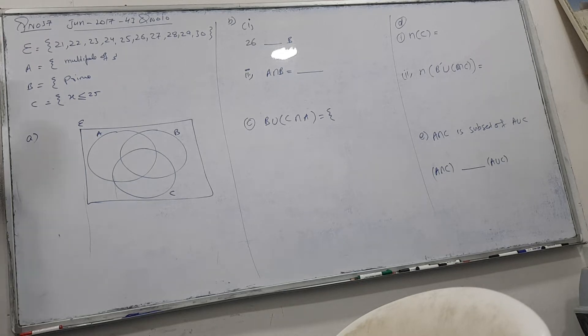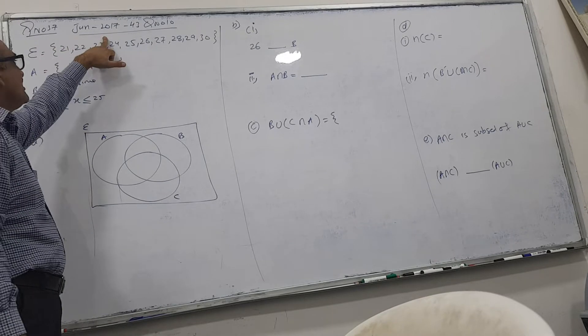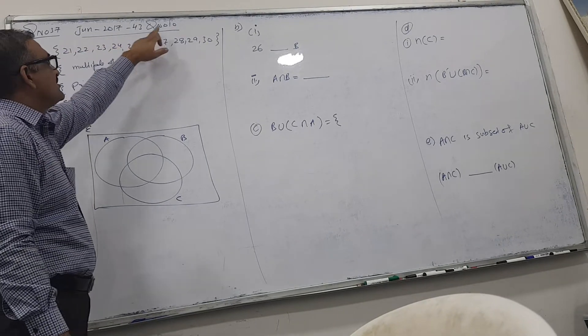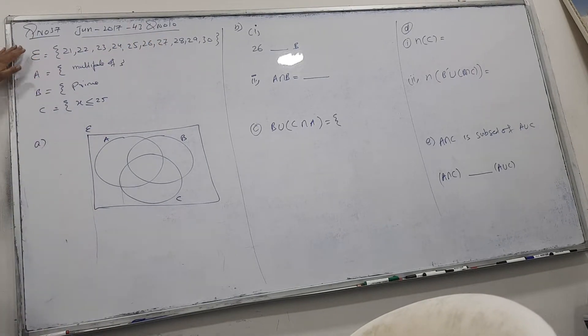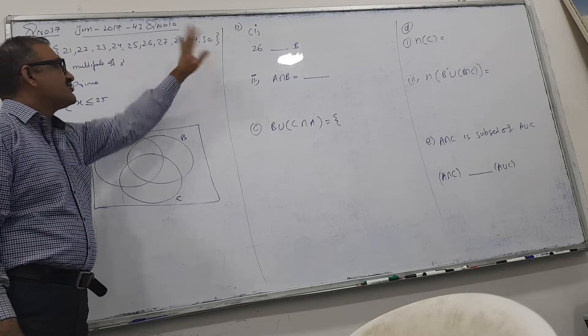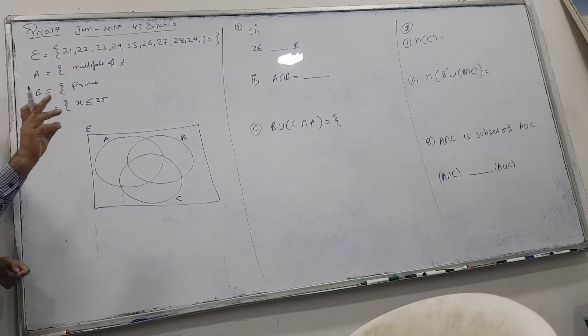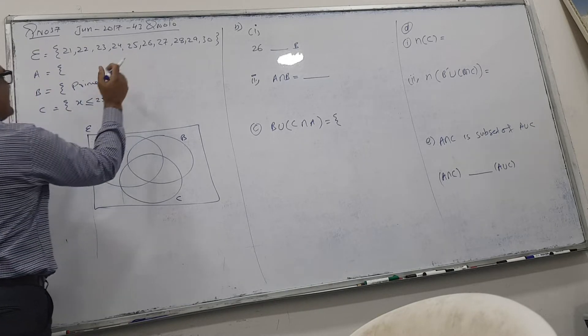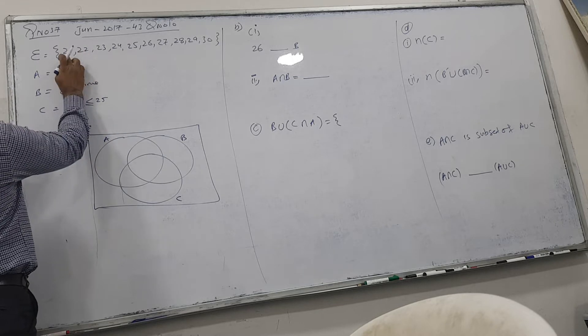This is a question June 2017 43 variant question number 10, worksheet question number 37. The universal set ε is given by numbers 21 to 30. For multiples of 3, we remove multiples of 3 and check: is it multiple of 3 or not?